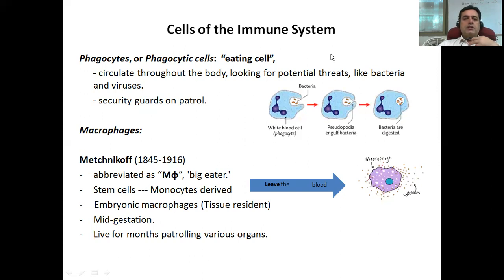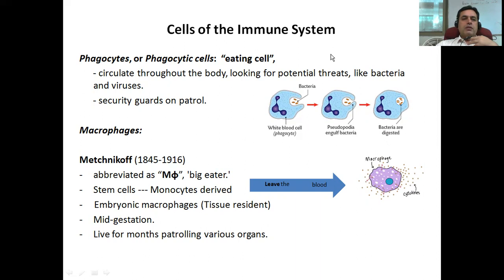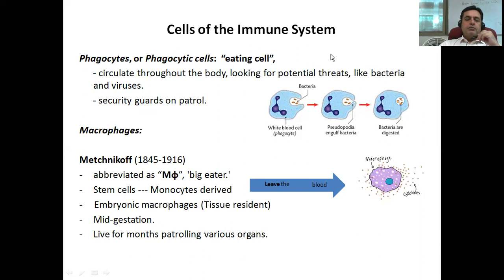Mechnikov discovered a type of cell that would eat upon microorganisms. He called these cells macrophages or miniphages. He had observed two types of cells: big eater cells or macrophages, and mini eater cells or miniphages. The miniphages we today know as neutrophils. So he was the first to observe that there is some kind of defense in our body, and that started a new era and new field of immunology, in which many people later took interest and did a lot of important work during the early 20th century.